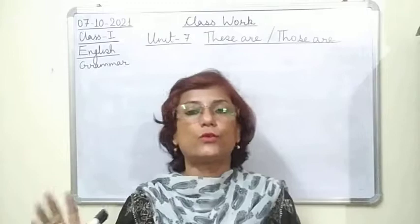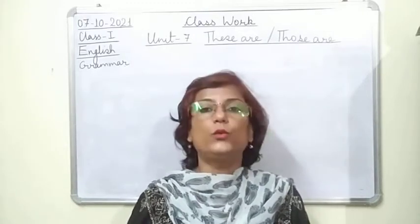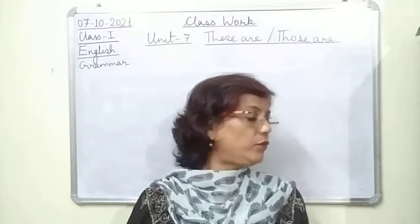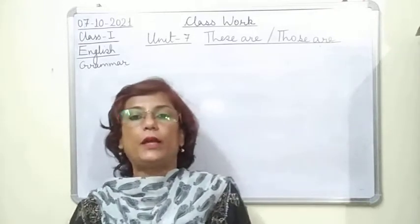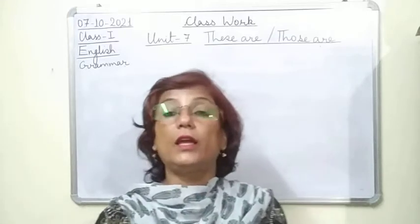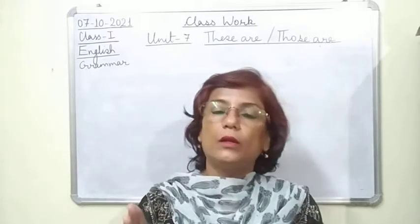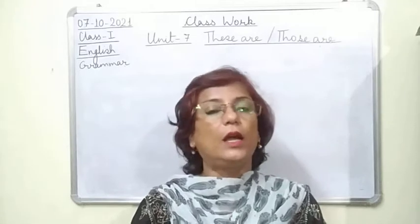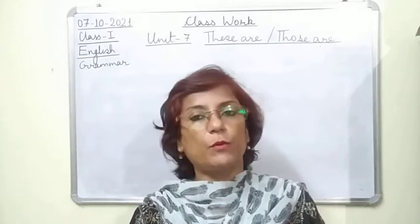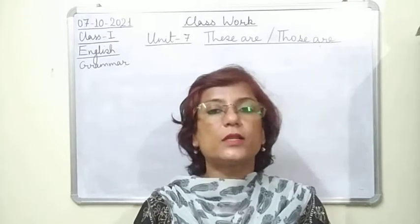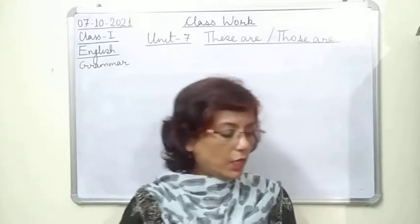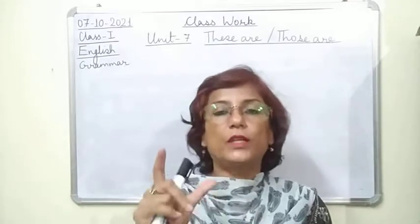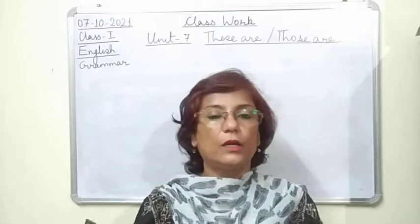We are on Unit number 7 in grammar, as you can see on the board, and we are continuing with the same unit. We have done exercises number one and two; today we will be doing exercise number three. By now I hope the use of 'these are' and 'those are' is very clear to you. We have done 'this is' and 'that is' earlier. Now in this exercise, it is like a revision of this is, that is, these are, and those are.